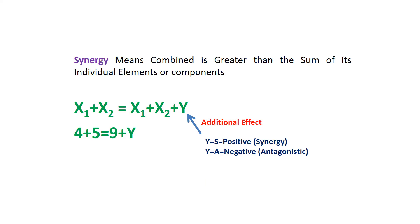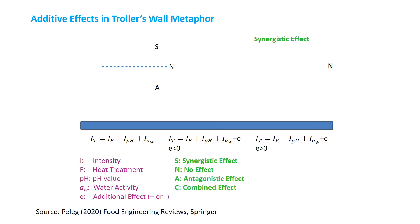We need to understand synergy and antagonistic scenarios. For example, we have two components x1 and x2. If we add x1 plus x2, then another additional term y could appear. If y is positive, then the addition is synergistic, and if y is negative, then the addition would be antagonistic. In hurdle technology, we need to achieve y as positive. I will explain it in Peleg's metaphor followed by three practical examples.